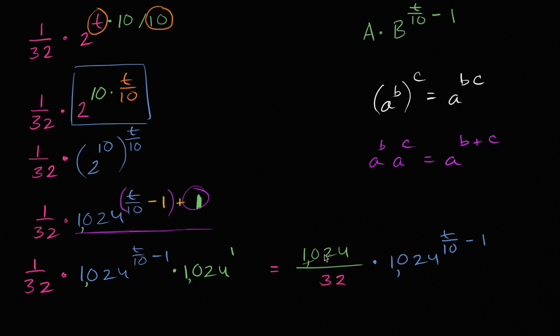And now we could just simplify this. You might recognize 1024, we already saw that was the same thing as 2 to the 10th power. 32 is the same thing as 2 to the 5th power. So 2 to the 10th divided by 2 to the 5th. Actually, this is another exponent property at play here, although you could just divide the numbers. If you have a to the b over a to the c, this is going to be equal to a to the b minus c.